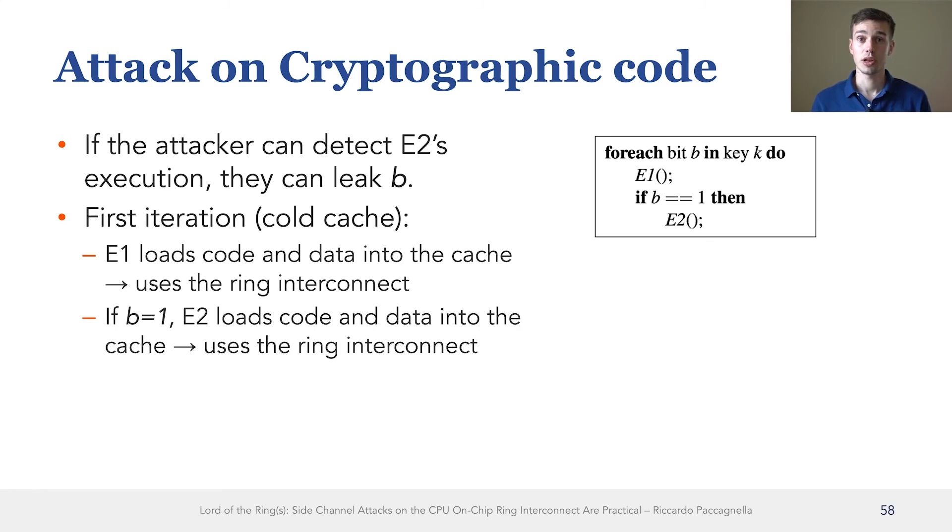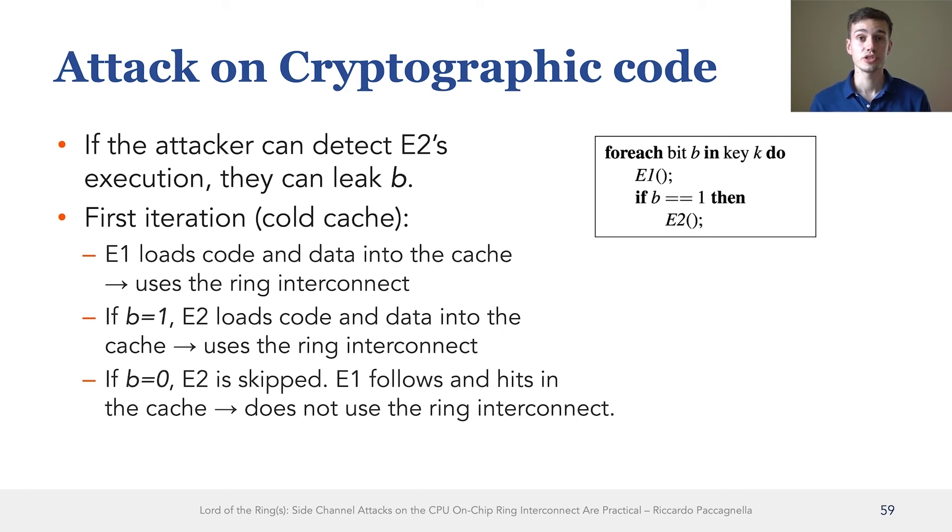And E2 again will miss in the cache and this will cause the CPU to bring data from DRAM all the way to the cache, causing ring interconnect utilization. However, if the bit is equal to zero, then E2 is just skipped. And this means that the victim will jump to the next iteration of the loop. But since E1 was just called, E1 will hit again, and therefore the ring interconnect is not utilized.